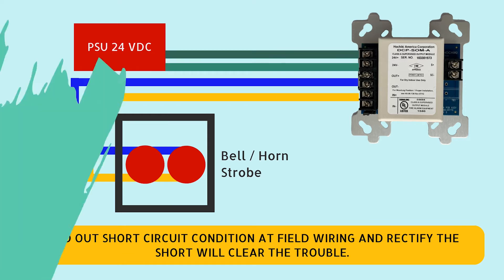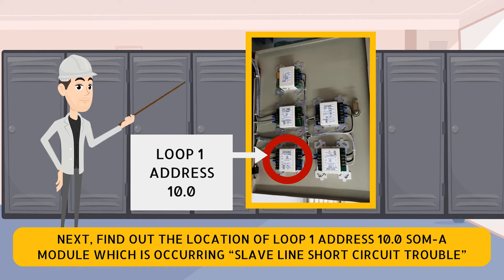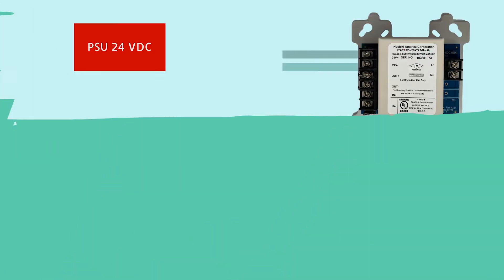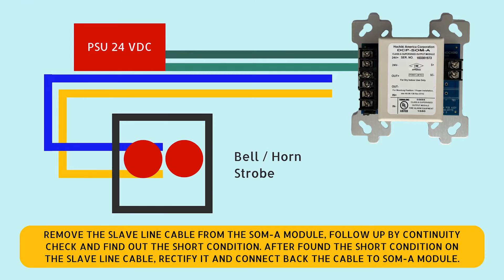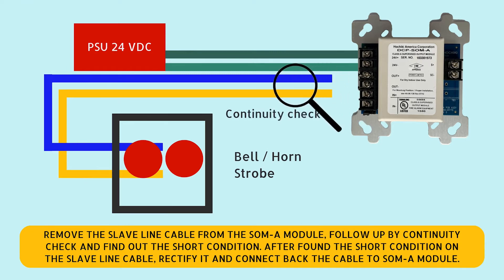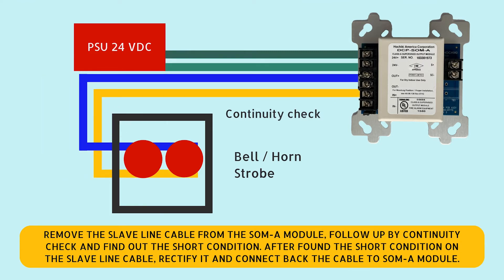Find out the location of Loop 1, Address 10.0 SOMA module which is reporting the slave line short circuit trouble. Remove the slave line cable from the SOMA module, then perform a continuity check to find the short condition. After finding the short condition on the slave line cable, rectify it and reconnect the cable to the SOMA module.